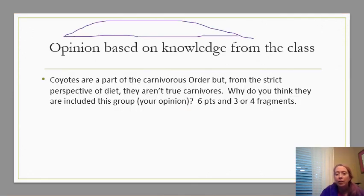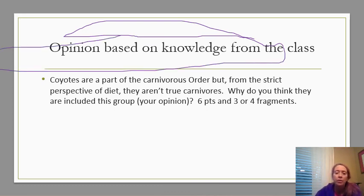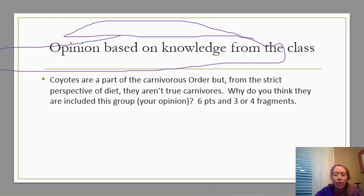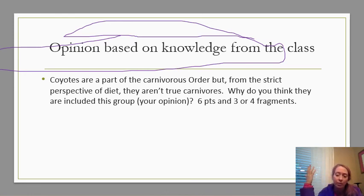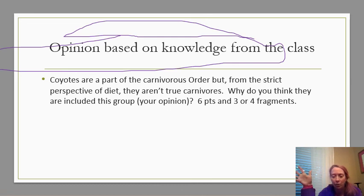Opinions are always great, especially if they're using knowledge from the class. You want them to use terms and knowledge from the class. We talk about classification systems in some biology classes — coyotes are part of the carnivorous order, but from a strict diet perspective, they aren't true carnivores. 'Why do you think they're included in this group? This is your opinion.' I want three or four fragments worth six points. You could also do an opinion with required terms: use the terms 'succession' and 'primary and secondary succession' and talk about human disturbances in the Pacific Northwest. Asking an opinion based on class knowledge or terms is so great.